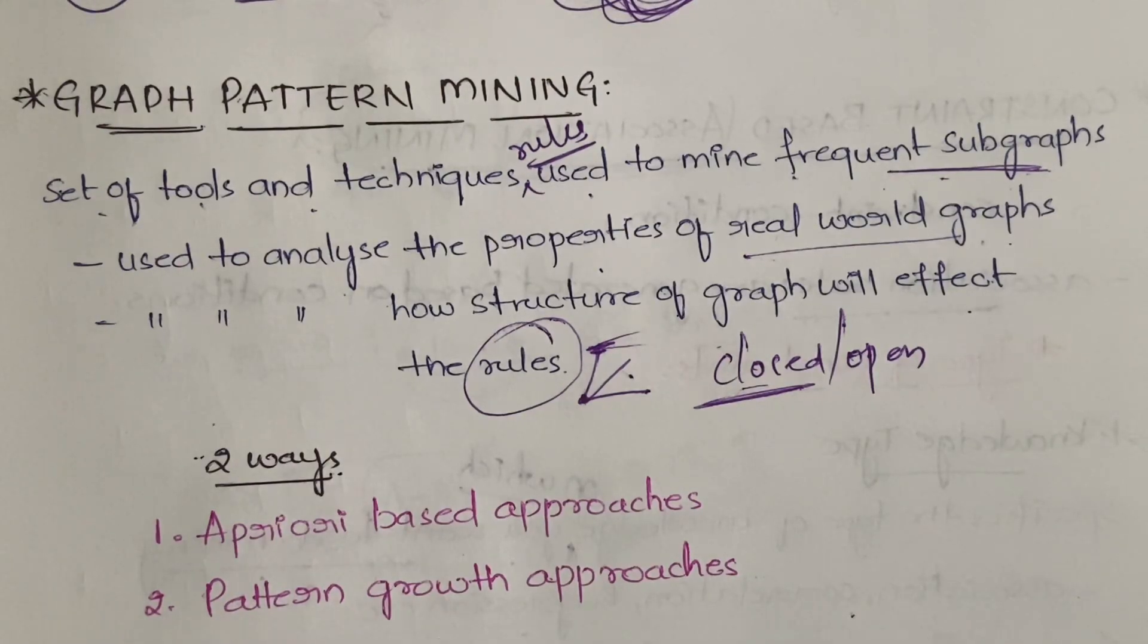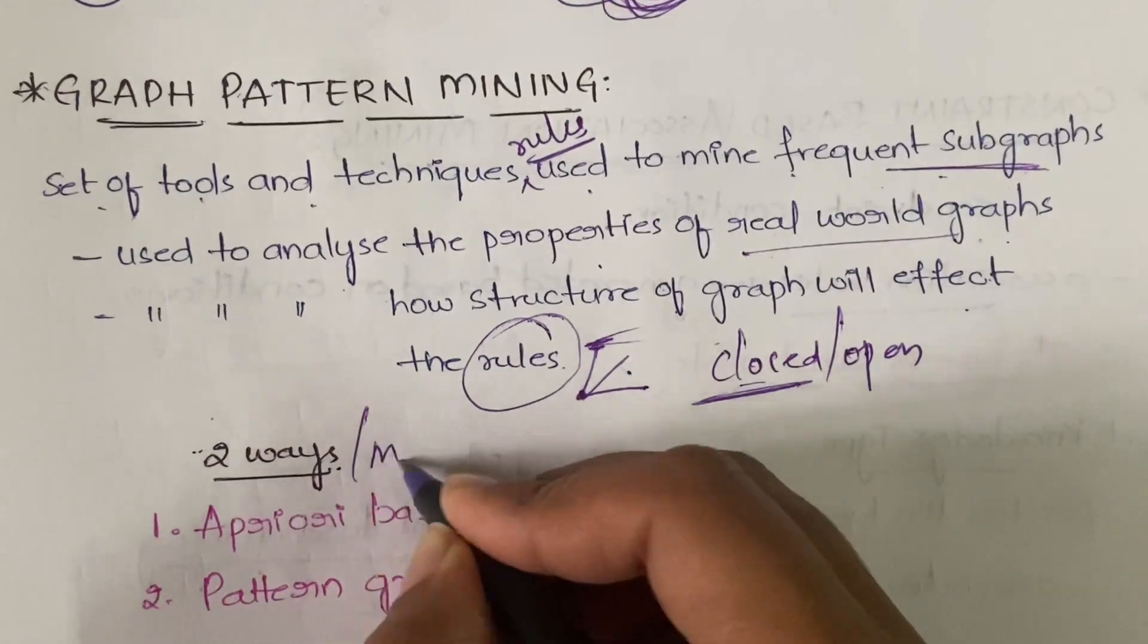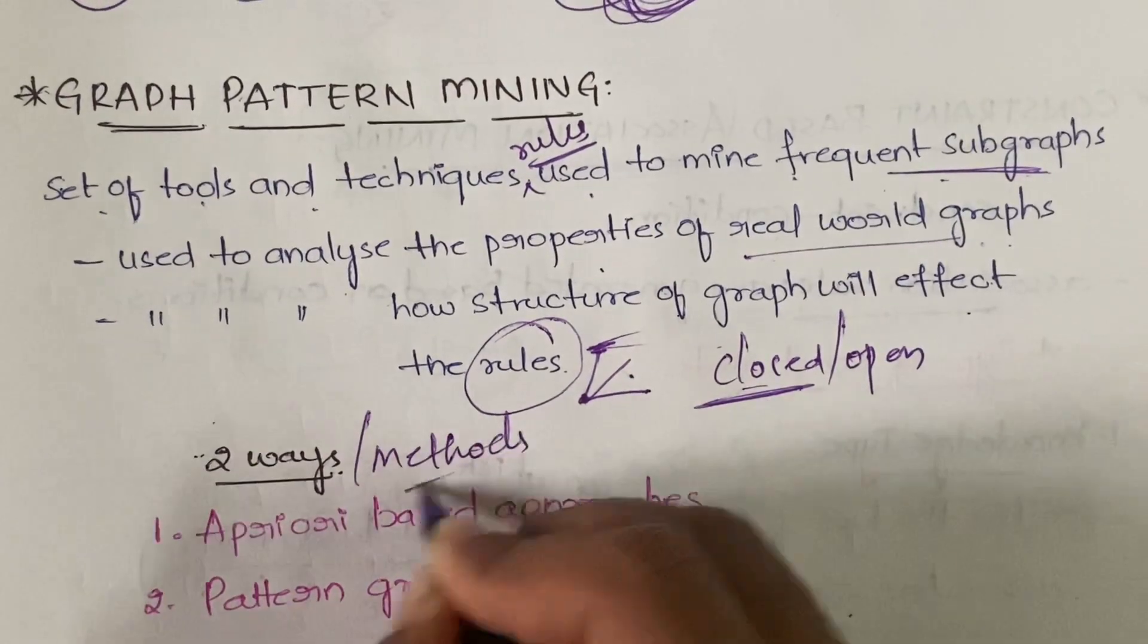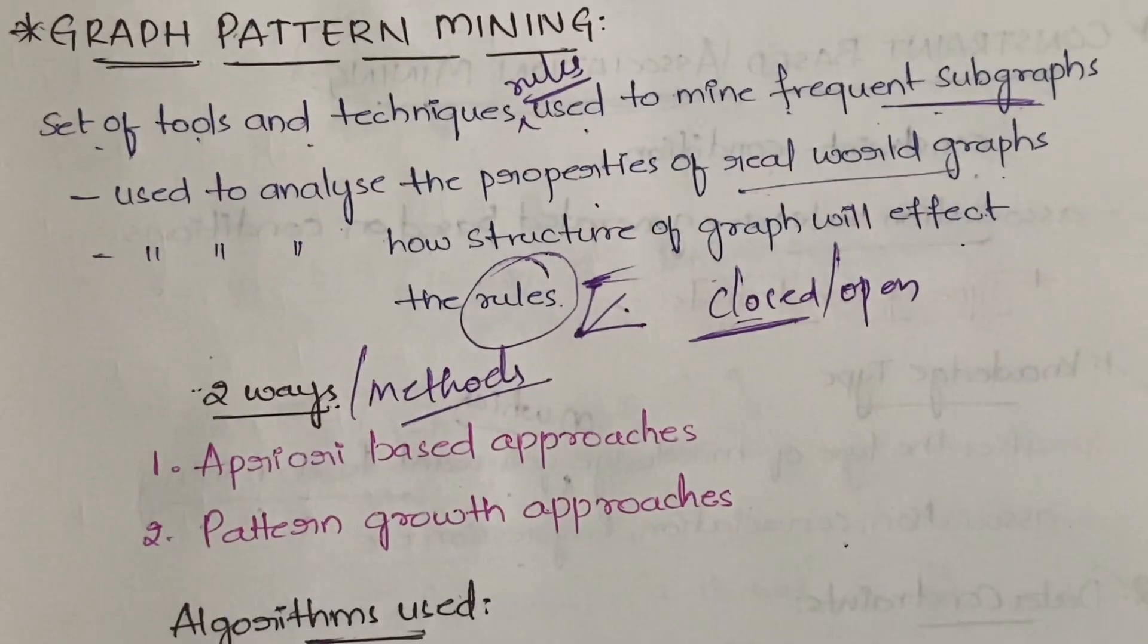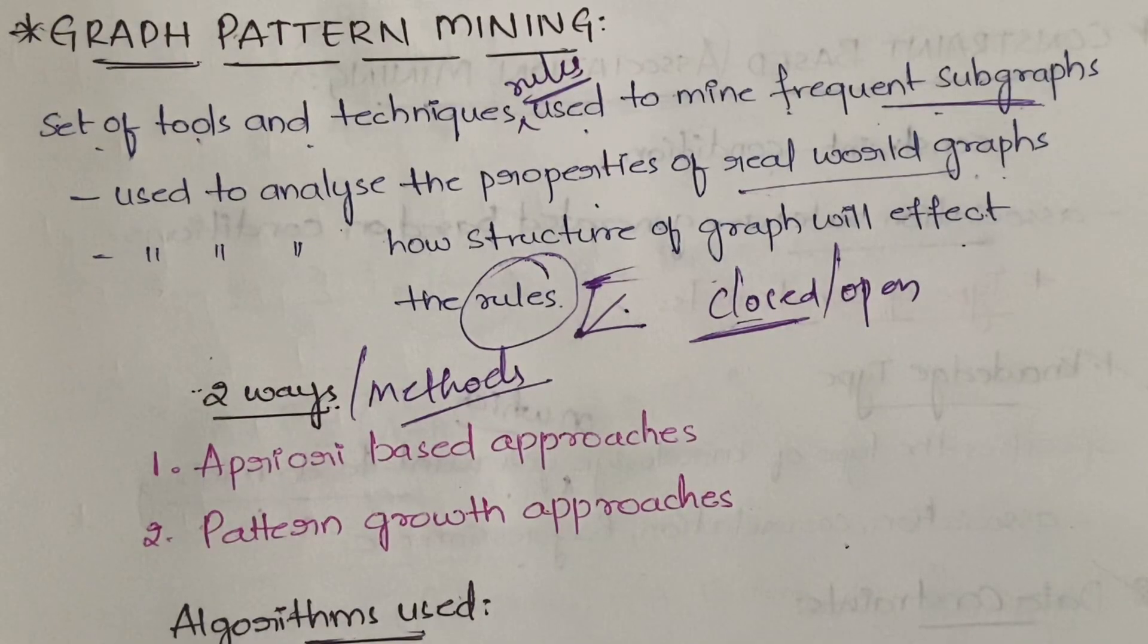This graph pattern mining can be done in two ways, or you can say we have two methods: apriori-based approaches and pattern growth approaches. Based on the apriori algorithm you have one, and based on frequent pattern growth algorithms you have one method.